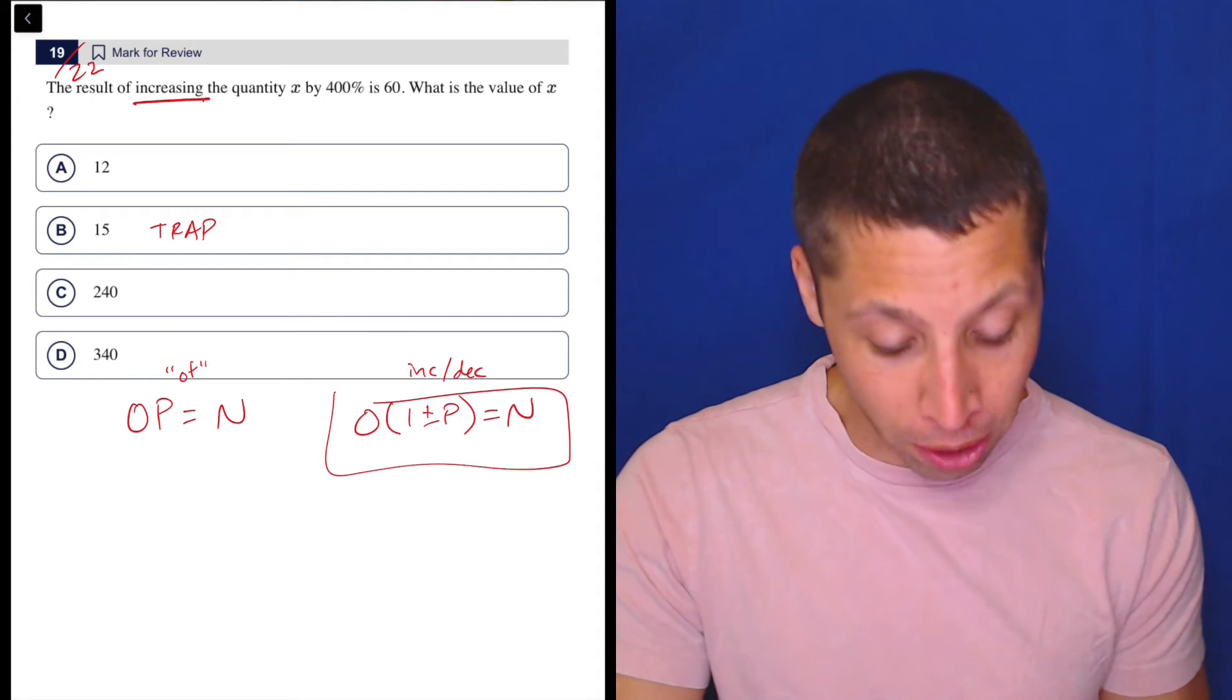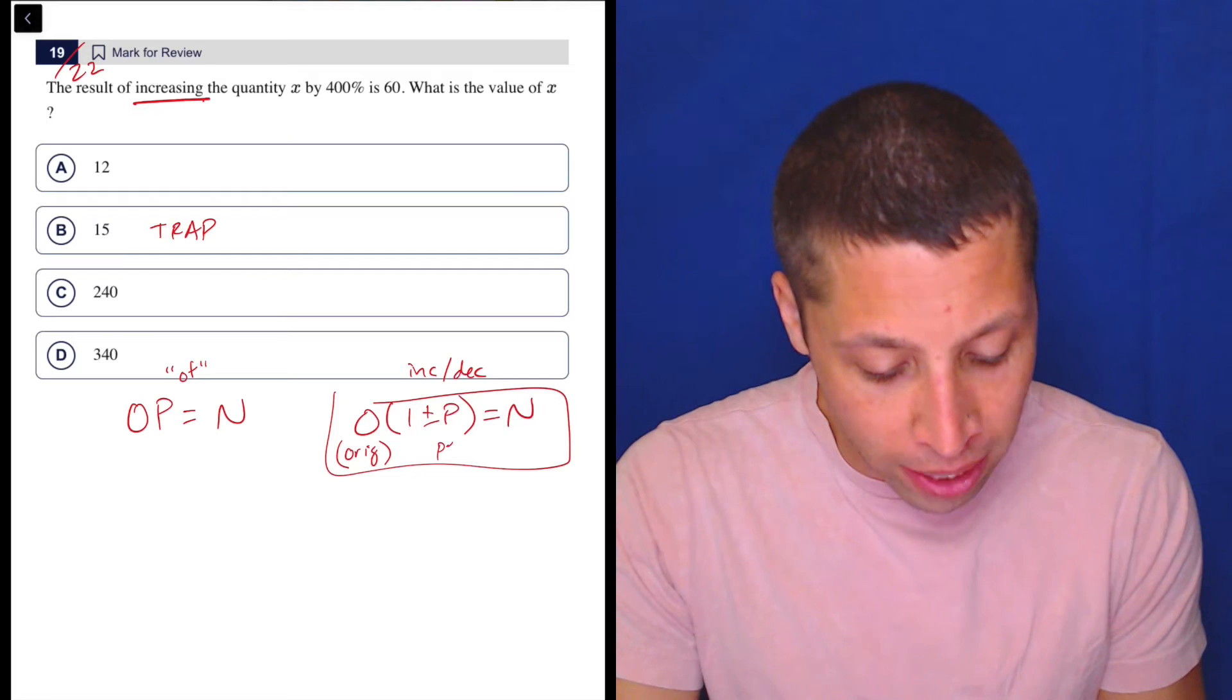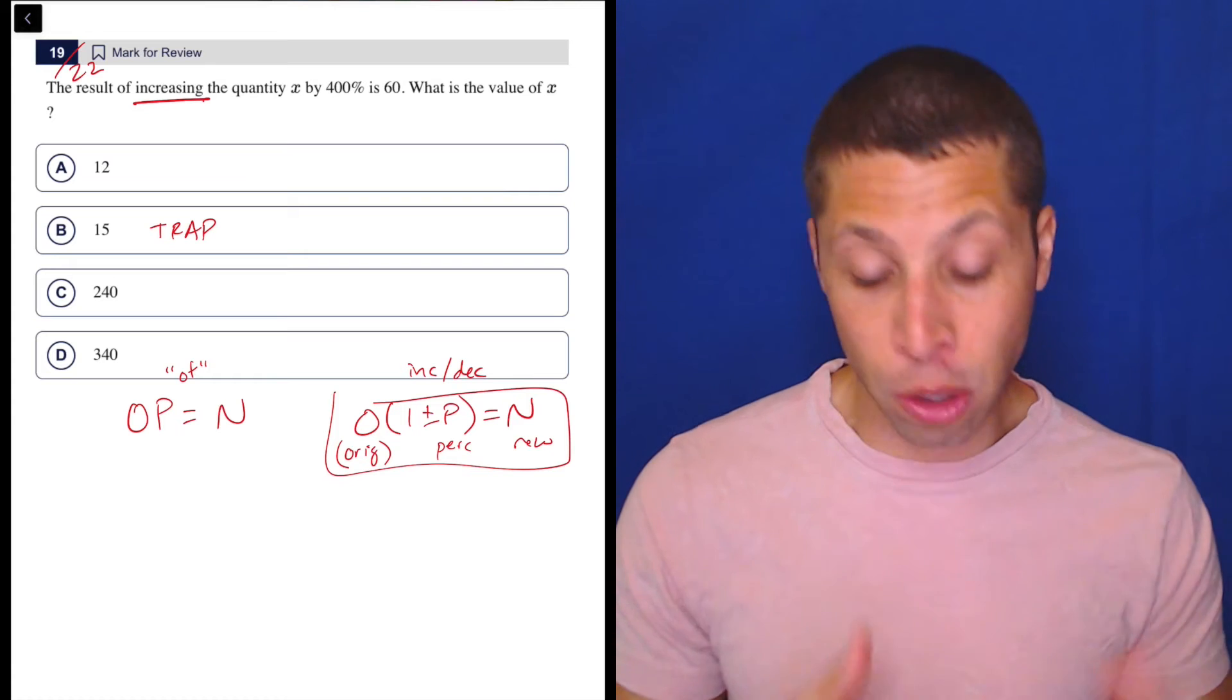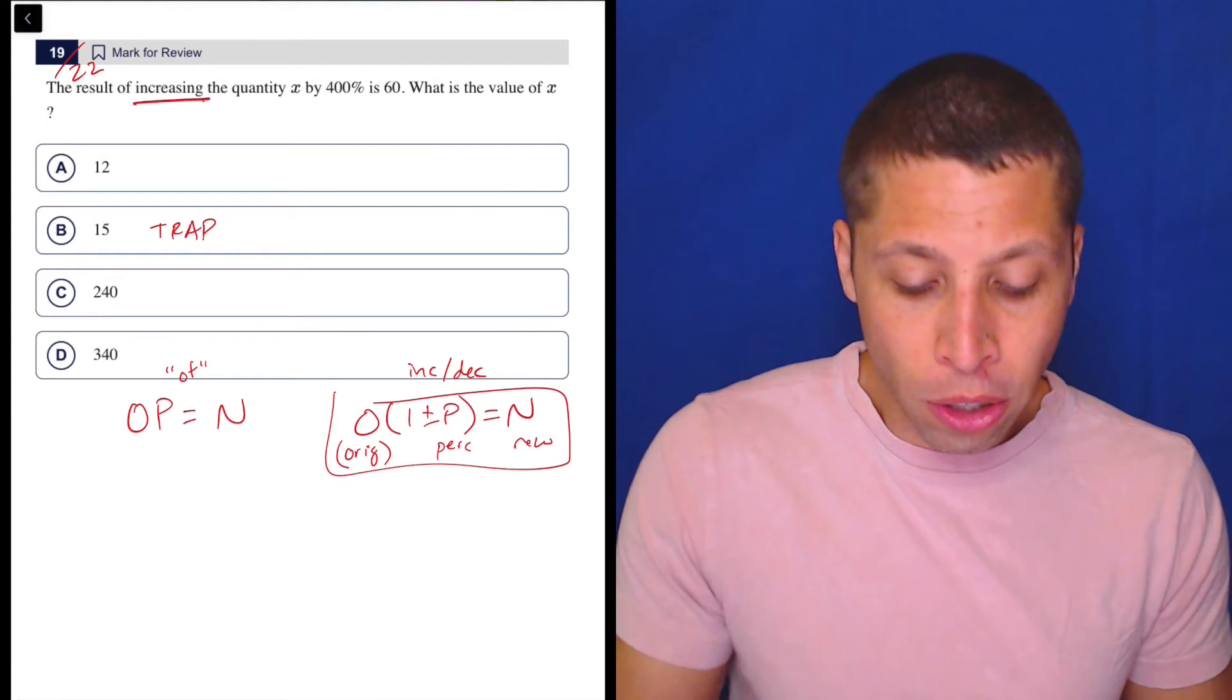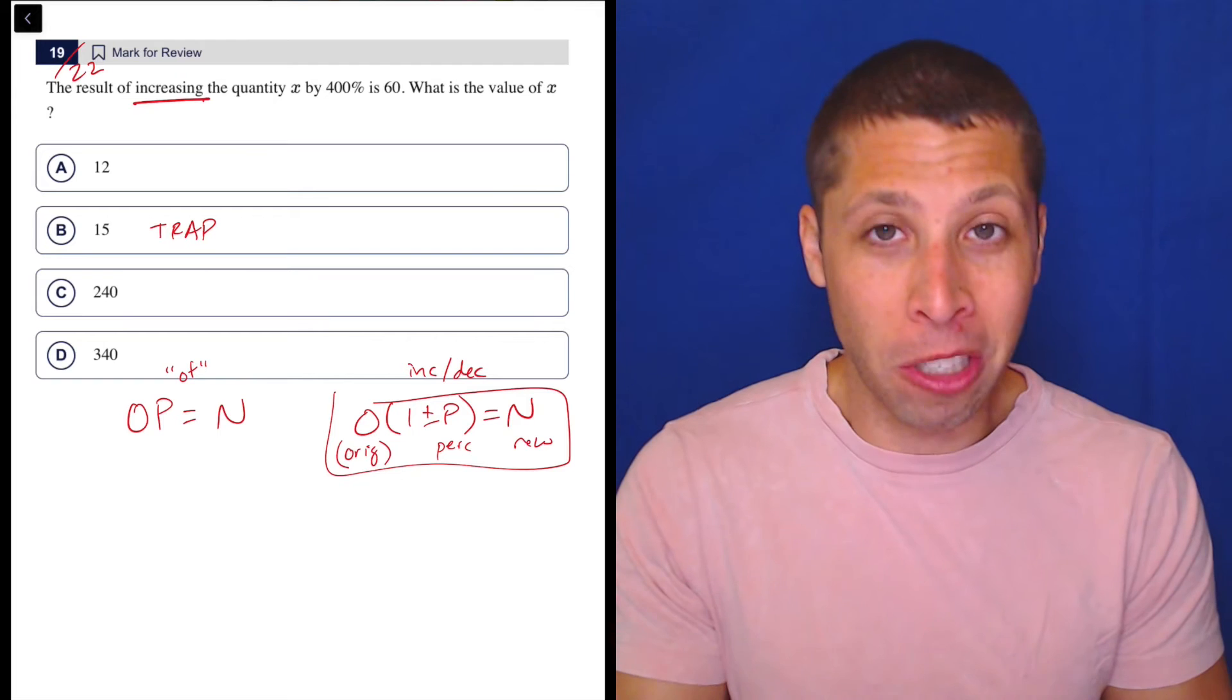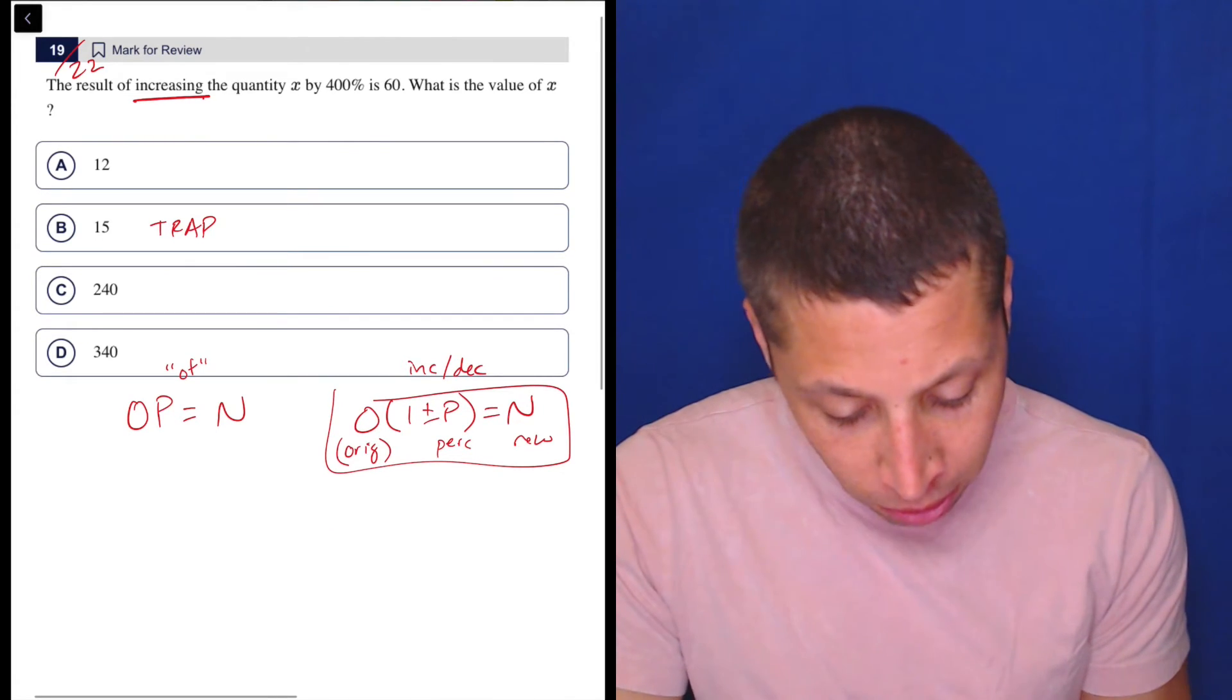Let's just review how it works. We have an original value, we have a percentage, so that's the percent, it's going to be put as a decimal, and then we have some sort of new value. We just need to make sure we don't confuse the original value with the new value, but they make it really clear. The result of increasing the quantity X by 400% is 60. We start with X, then we increase it by 400%, and we end up with 60. So the original is X.